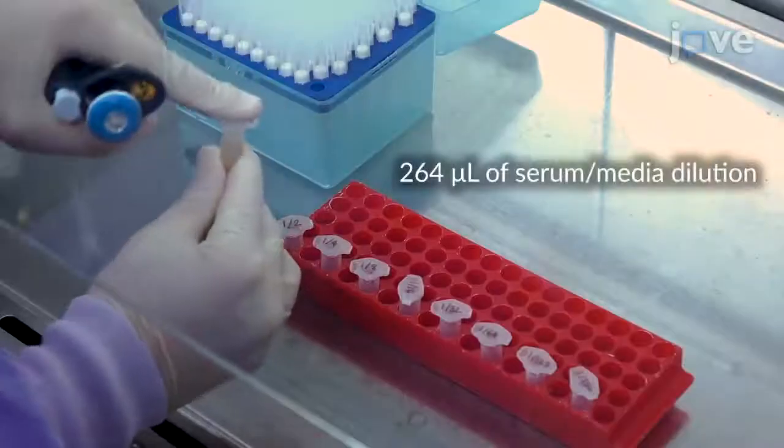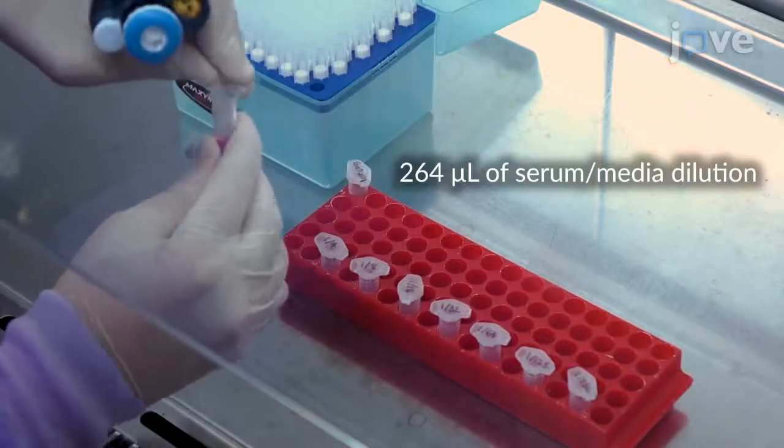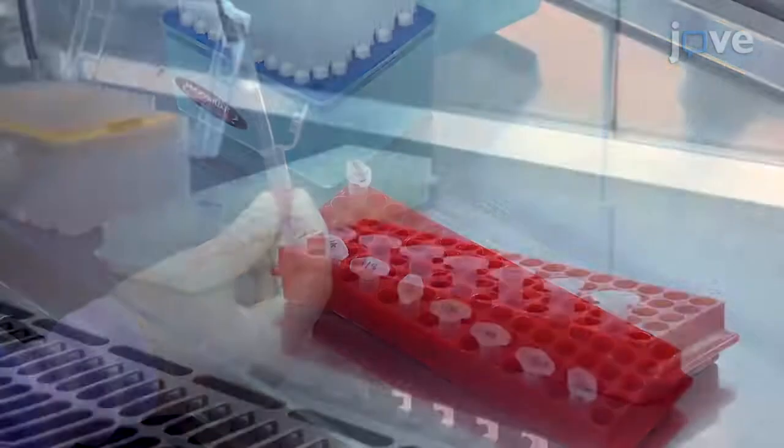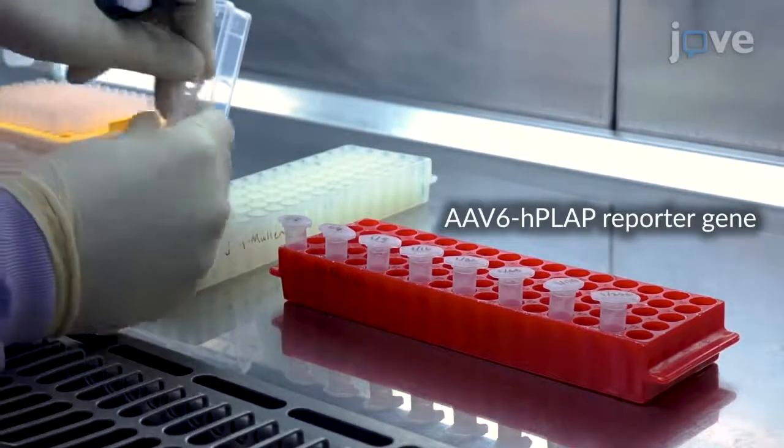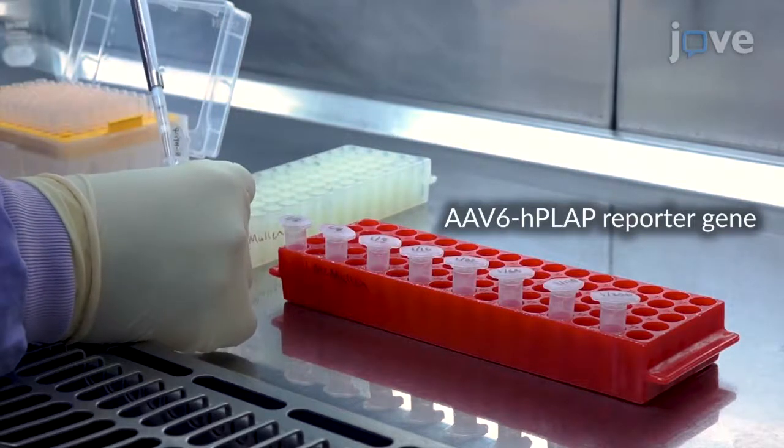On day 2, generate serial dilutions of the serum samples of interest in 1.5 milliliter microcentrifuge tubes using pre-warmed complete DMEM. To each tube with diluted serum samples, add 66 microliters of the 7.5 times 10 to the 6th viral genome per microliter virus working solution.